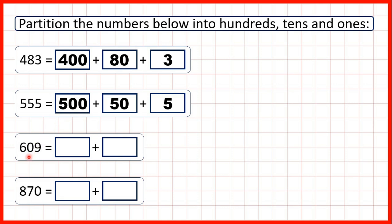But now we have 609. This 6 in our hundreds represents 600. We know it's in our hundreds because we have two digits after the 6, so when we partition, we need two zeros after the 6.